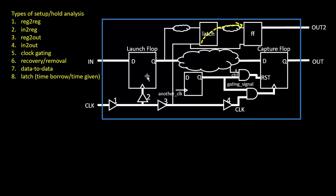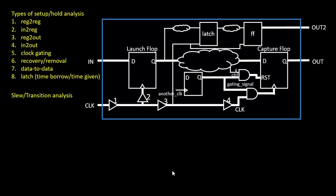Along with setup and hold analysis and reg-to-reg checks, there are other kinds of timing analysis done in STA. These are slew and transition checks, which ensure that at any point in the circuit your slew or transition is within a certain min and max range. There will be minimum and maximum requirements for slew and transition, and this analysis ensures every point in the circuit meets that criteria. There are power-related reasons: if the slew is too sharp it increases short-circuit power, and if it is too large it increases the time the gate is turned on.